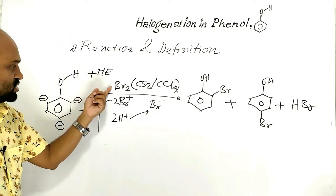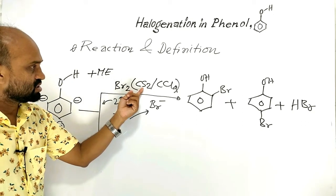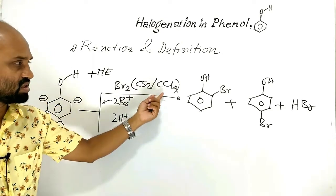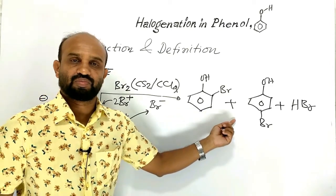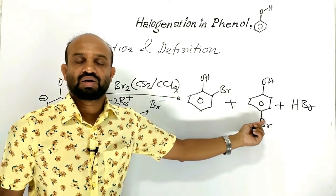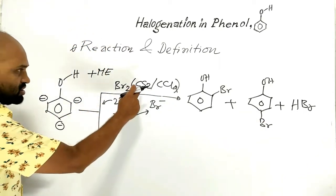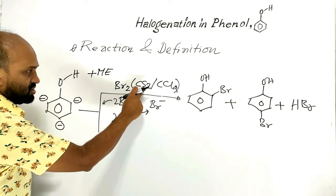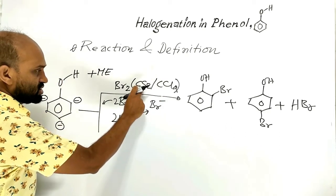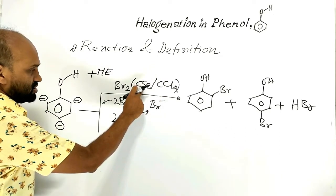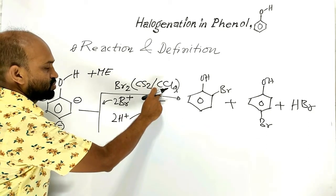Phenol reacts with bromine solution. Here, the solvent is carbon disulfide or carbon tetrachloride. The products are ortho-bromophenol and para-bromophenol, and hydrogen bromide is formed as a by-product. Both carbon disulfide and carbon tetrachloride are non-polar solvents.